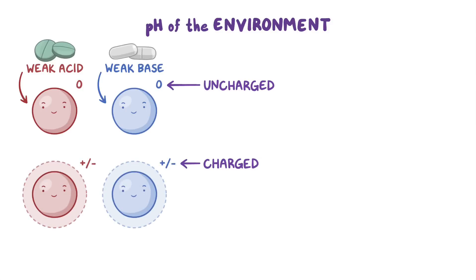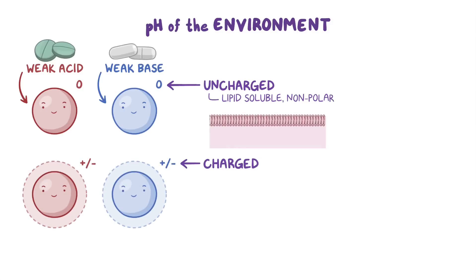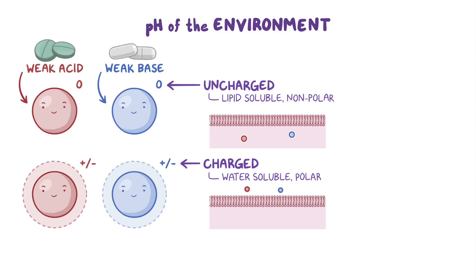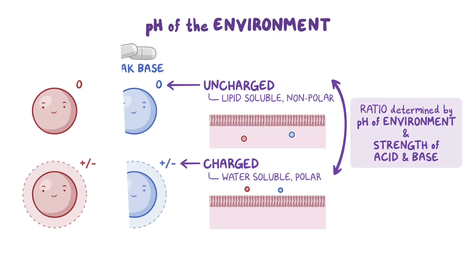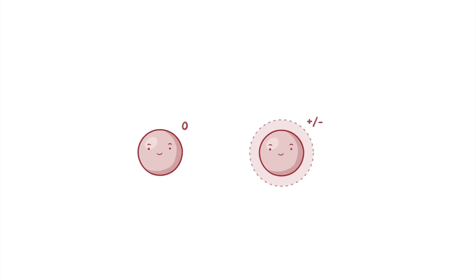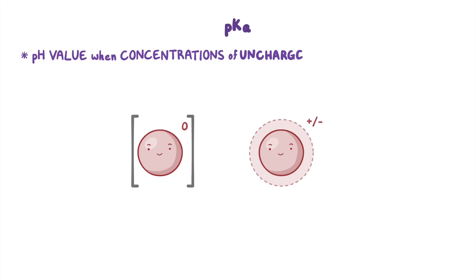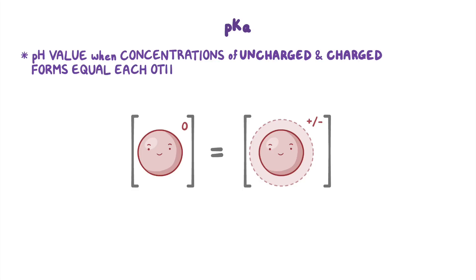The uncharged form is the lipid-soluble, non-polar one, which happily diffuses through the cell membrane, while the charged form is water-soluble and polar, and thus cannot diffuse through the cell membrane easily. The ratio between the two forms is determined by the pH of the environment and the strength of the weak acid or base. The strength is measured by pKa, which is the pH value when concentrations of the uncharged and charged forms equal each other.